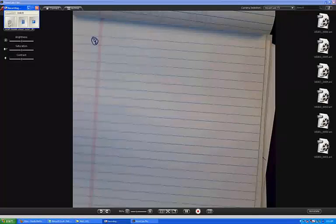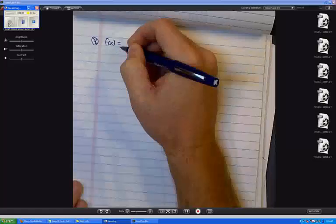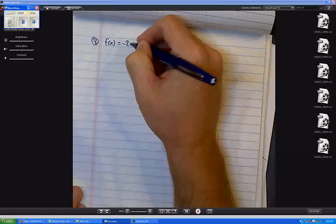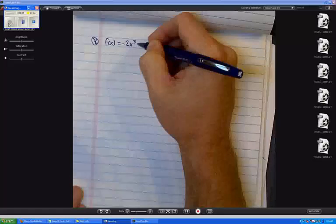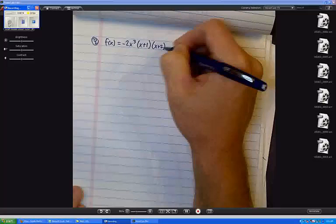Number 9 with this function, f of x equals negative 2x cubed times x plus 1 times x plus 2 quantity squared.